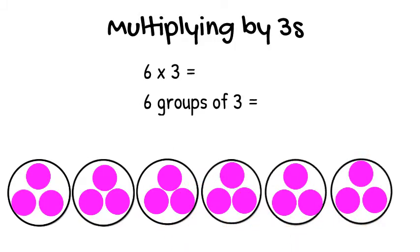Okay, now we're ready to skip count. The first circle has three circles in it, so we put a three on top. The next circle has another three. Three plus three is six, so we put a six on top.